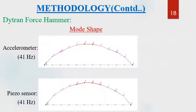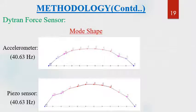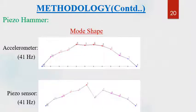The mode shapes obtained using Dytran force hammer as excitation show that mode shapes from both sensors are in good shape, and the natural frequency came out to be the same for both sensors at 41 Hz. When using PZT hammer as excitation, mode shapes obtained using accelerometer are in good shape, whereas using PZT sensor at midpoint there is some distortion while obtaining the mode shape. However, the natural frequency was found to be 41 Hz for both cases.